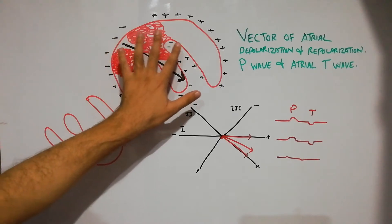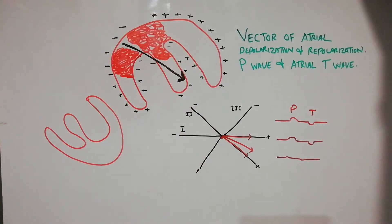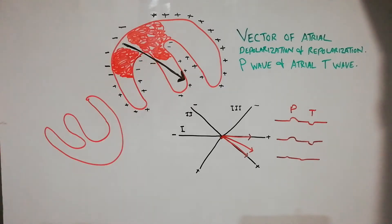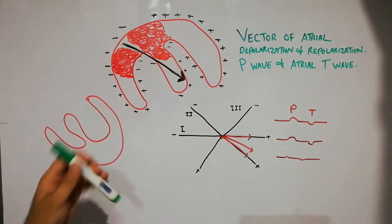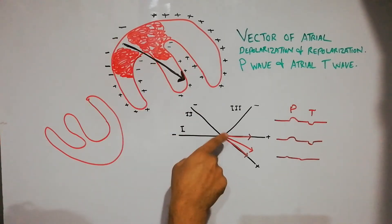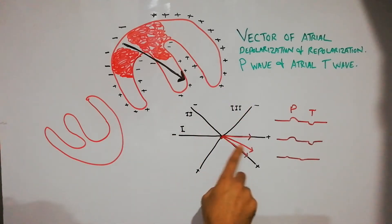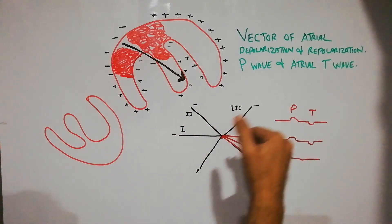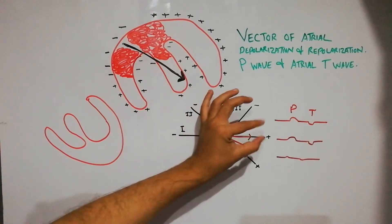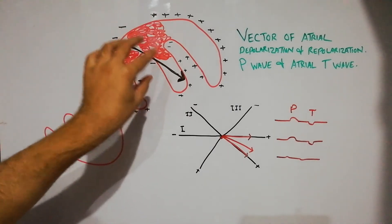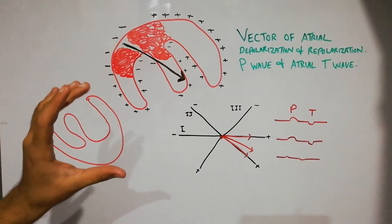By the time the depolarization has reached the end of the atria, the repolarization process has started from the top. The depolarization process moves in the direction of the septum, and the vector formed in this condition, if its analysis is done on the three bipolar limb leads, will give a positive deflection on lead one, lead two, and lead three. This is considered the P wave, and it will be very small as compared to the ventricle.